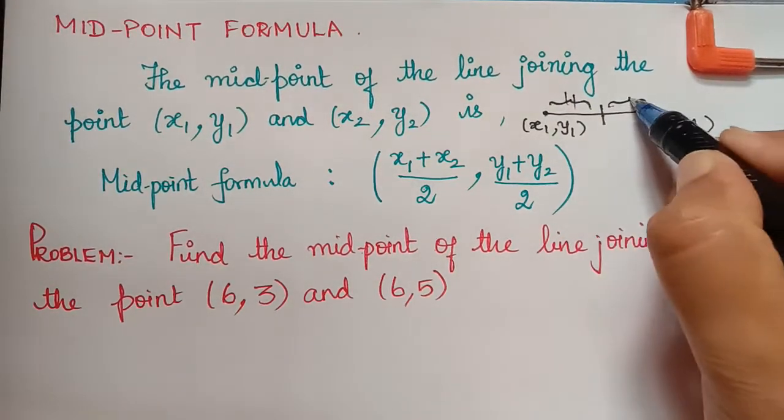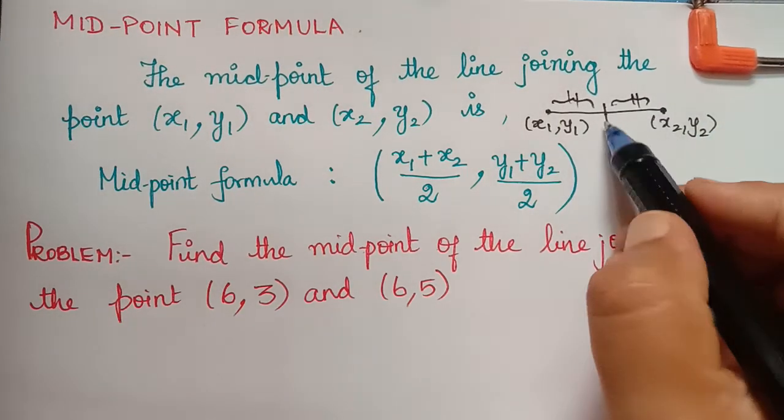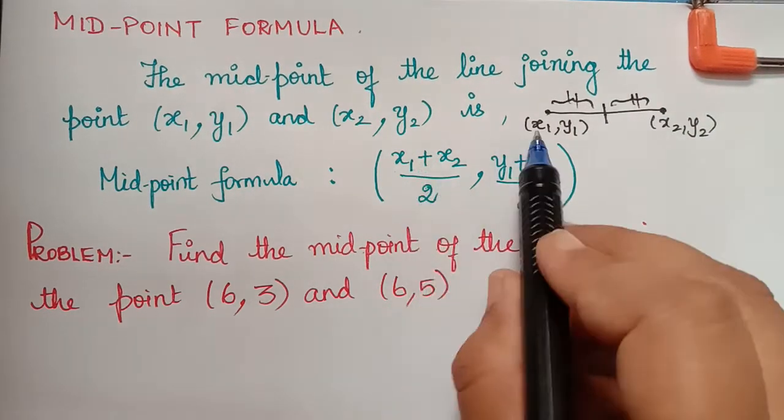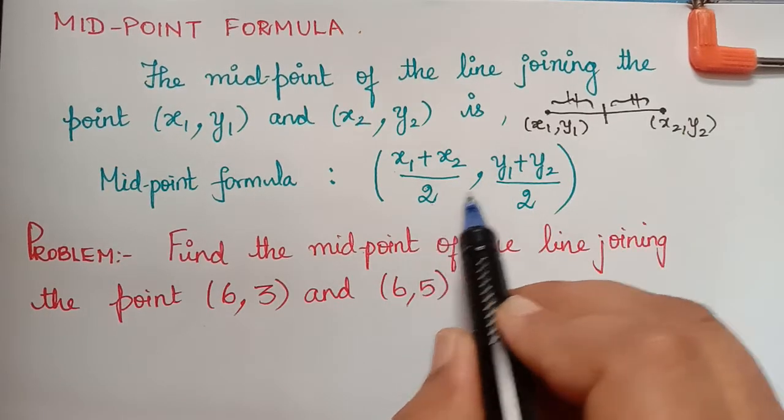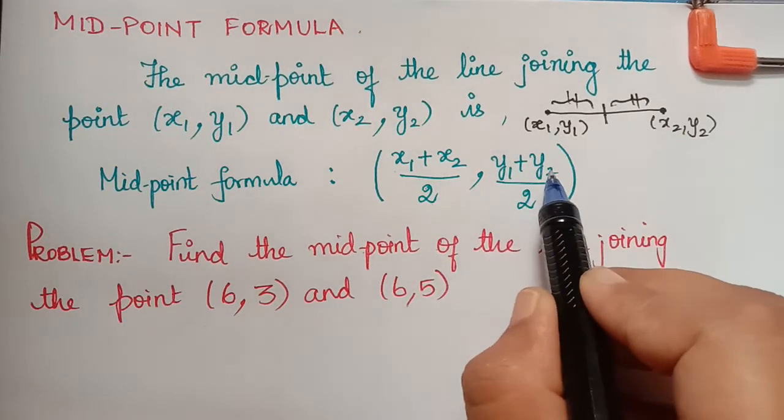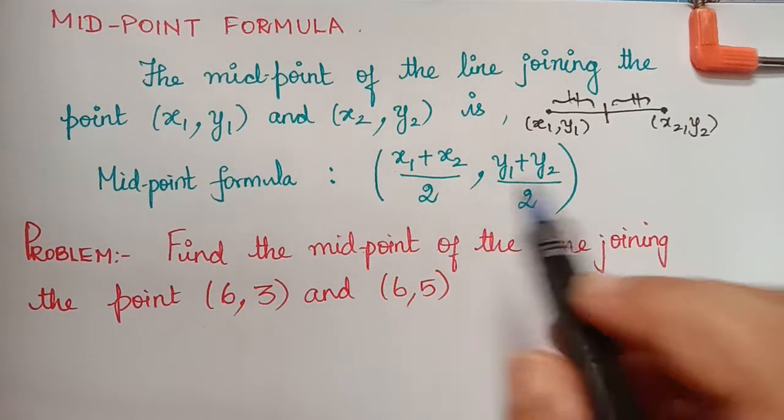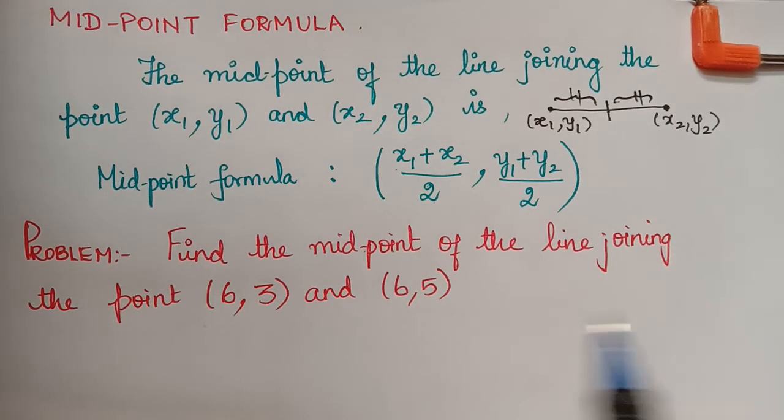The formula for midpoint is given by x1 plus x2 divided by 2 comma y1 plus y2 divided by 2. We shall learn this with the help of an example.